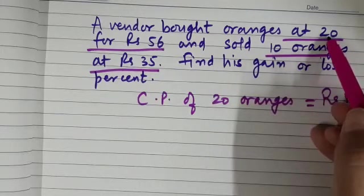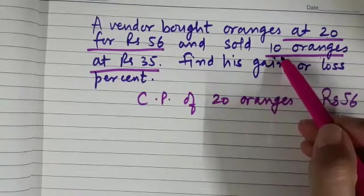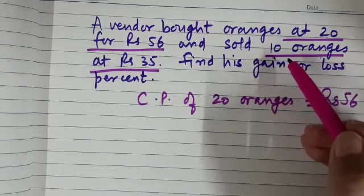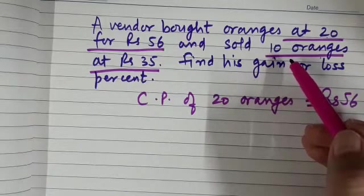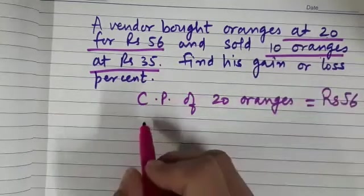Here it is 20 - CP of 20 oranges is given, and here it is selling price of 10 oranges is given. But we need to have a common number for comparing, so what we do is find out CP of 10 oranges.